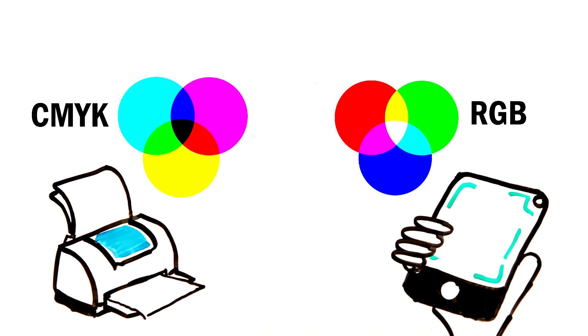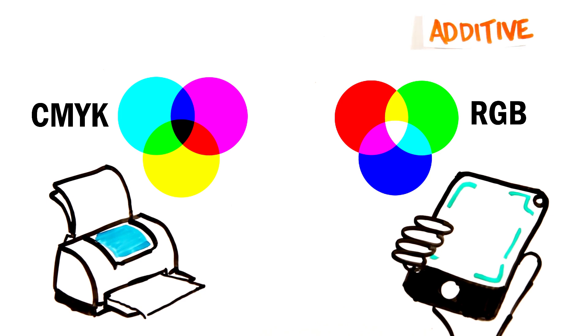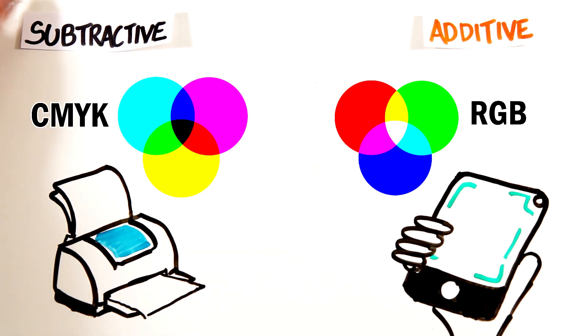These are different color models where RGB is additive, meaning the mixing of different lights of color create new colors, while the other two are subtractive models and absorb different wavelengths of light.